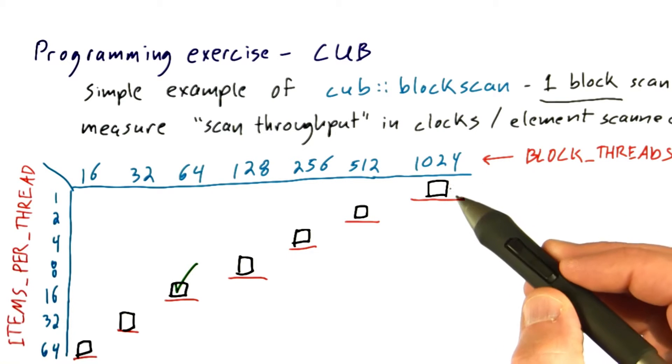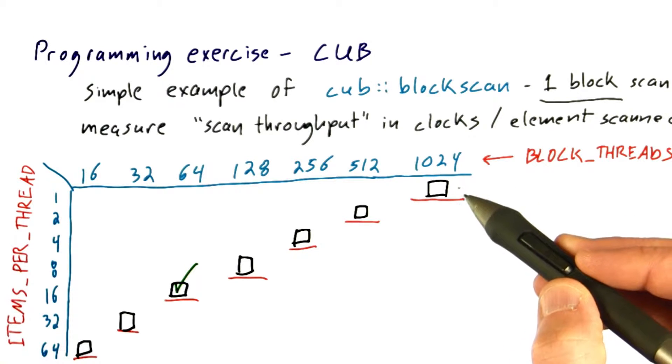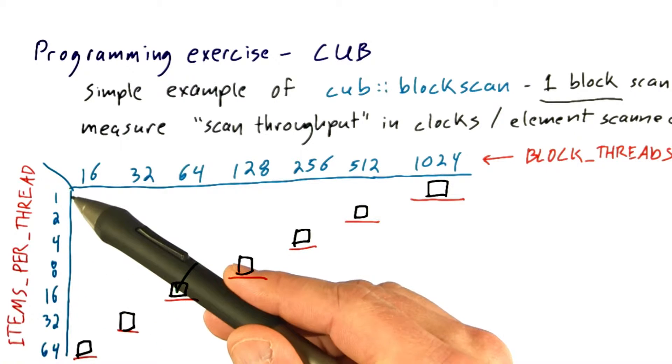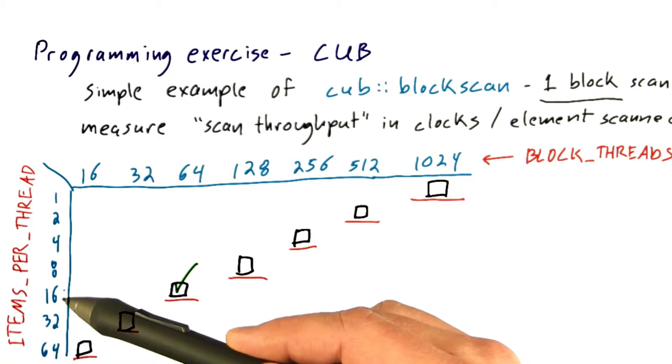And so the thing to notice is that throughput is generally increasing as the granularity per thread increases. So having threads do more and more serial work is generally a good thing.